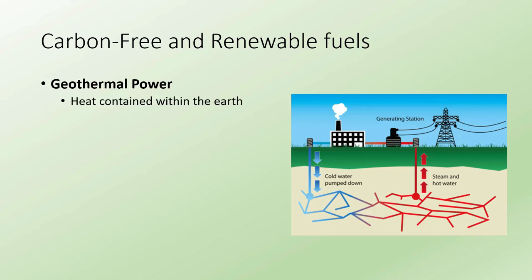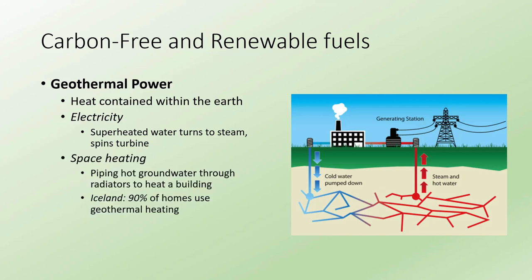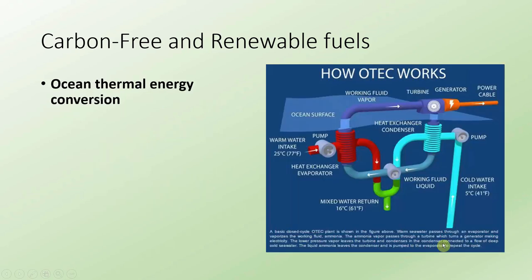Another popular energy source is geothermal power — using heat contained within the earth. Just like solar, there are two ways to use it: one is to create electricity by using hydrothermal groundwater, turning it into steam to spin a turbine. You can also use it for space heating by piping it up through radiators into a building. In Iceland, 90% of homes use this geothermal heating to heat their houses — a very cheap way to heat your home.